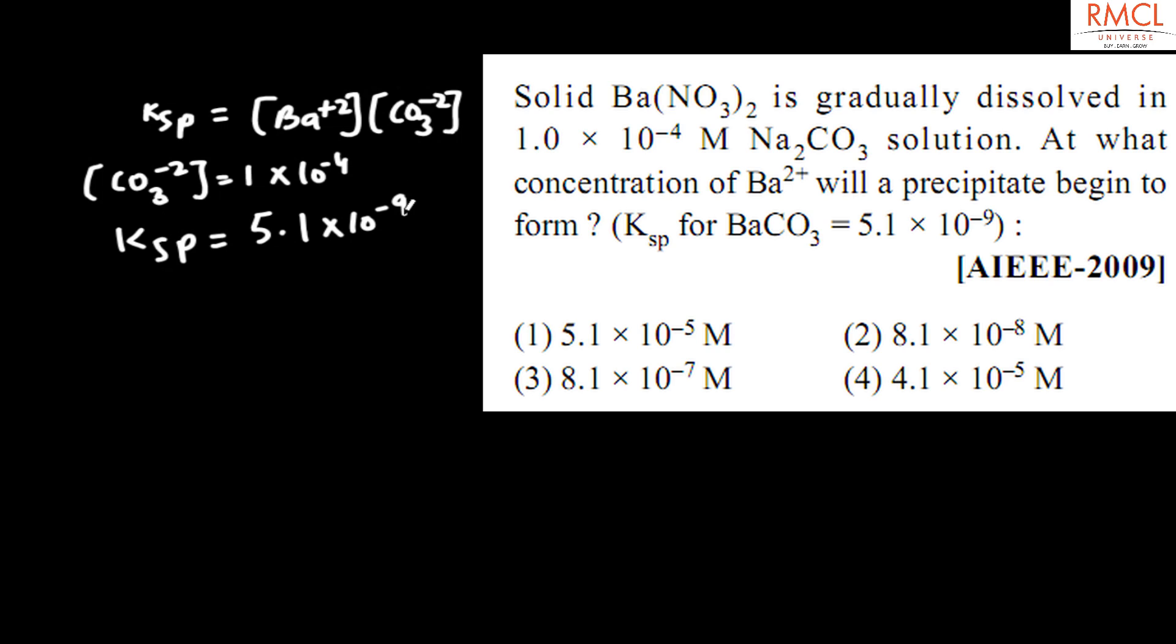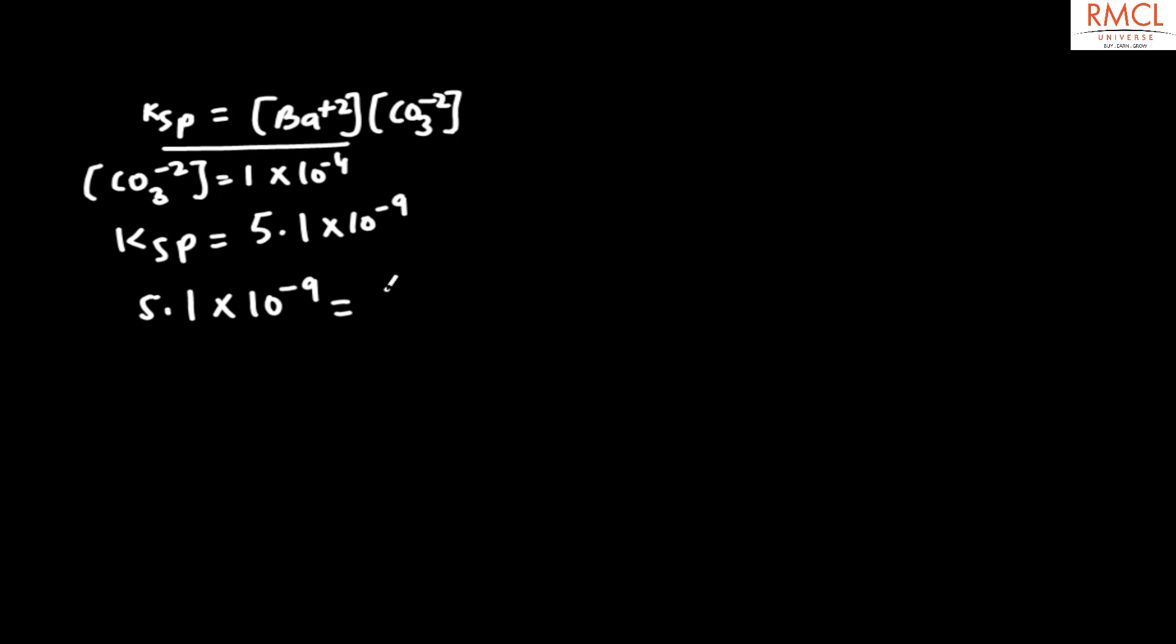The Ba^2+ concentration will be calculated from this formula. The Ksp value of 5.1 × 10^-9 equals the barium concentration times the CO3^2- concentration of 1 × 10^-4.